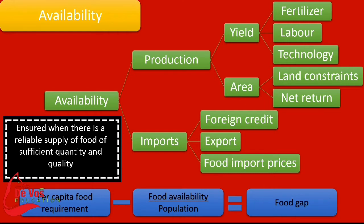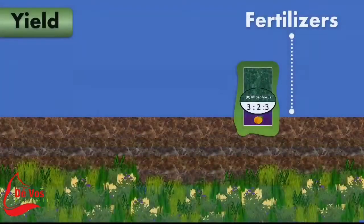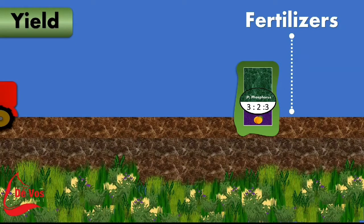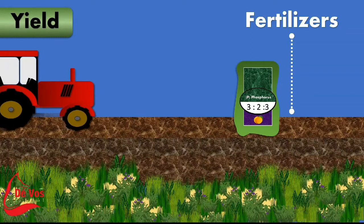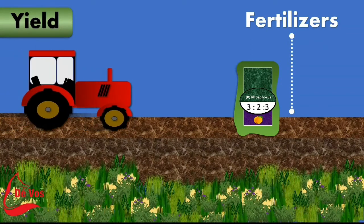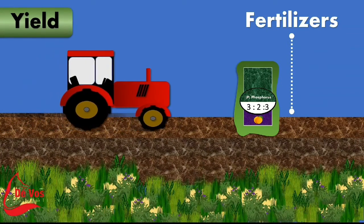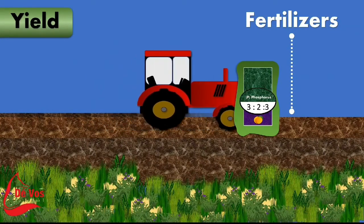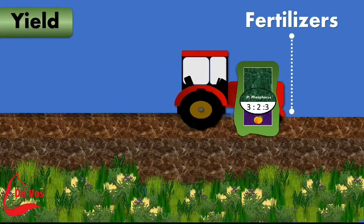Yield is the amount of a product being produced for agricultural or industrial purposes. Just like people, crops also need special minerals to keep them healthy and to have them yield their maximum potential. This is where fertilizers play a very important role. The three main nutrients that plants need are nitrogen, phosphorus, and potassium.